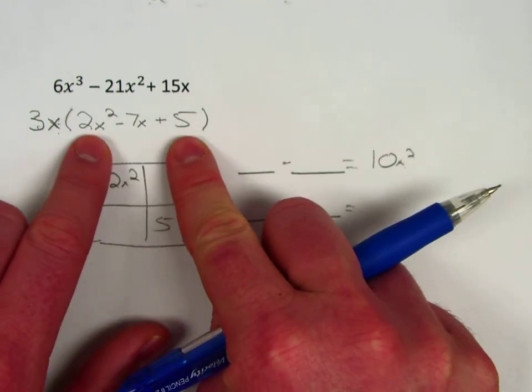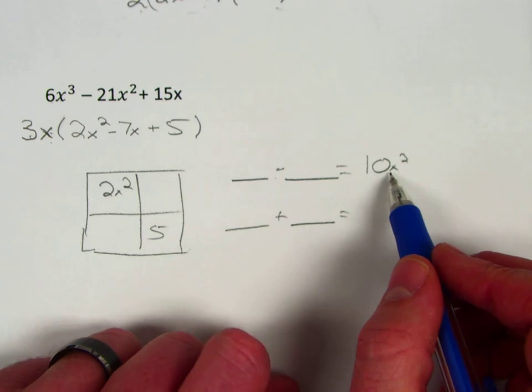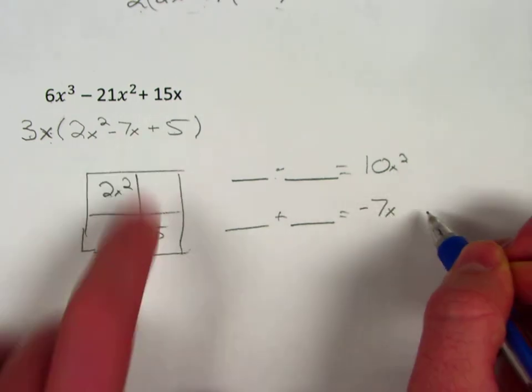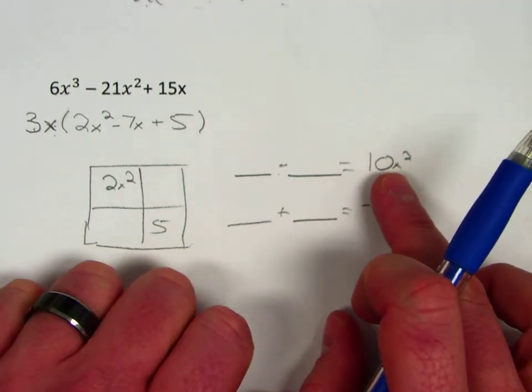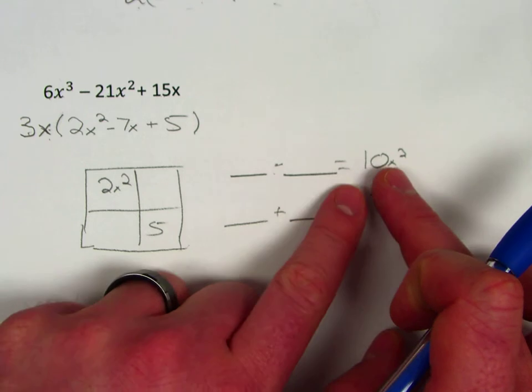And I'm looking for two numbers that when I multiply those two numbers they give me a 10x², and I got that 10x² by multiplying 5 and 2x². And then I want these same two numbers that multiply to give me this—I want them to add to give me a negative 7x. So I think about my factors of 10: 10 and 1, there's no way to combine those to get negative 7.